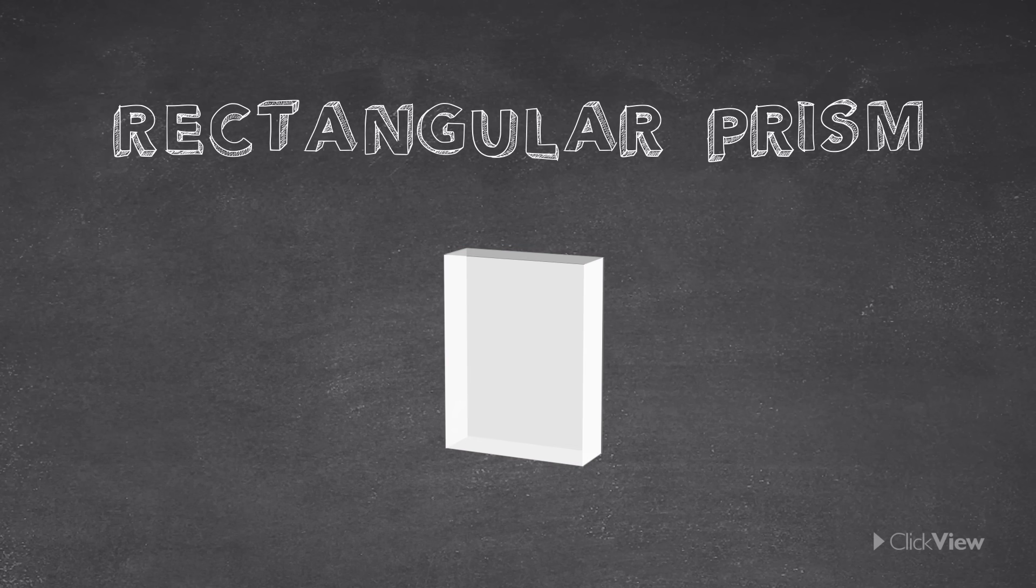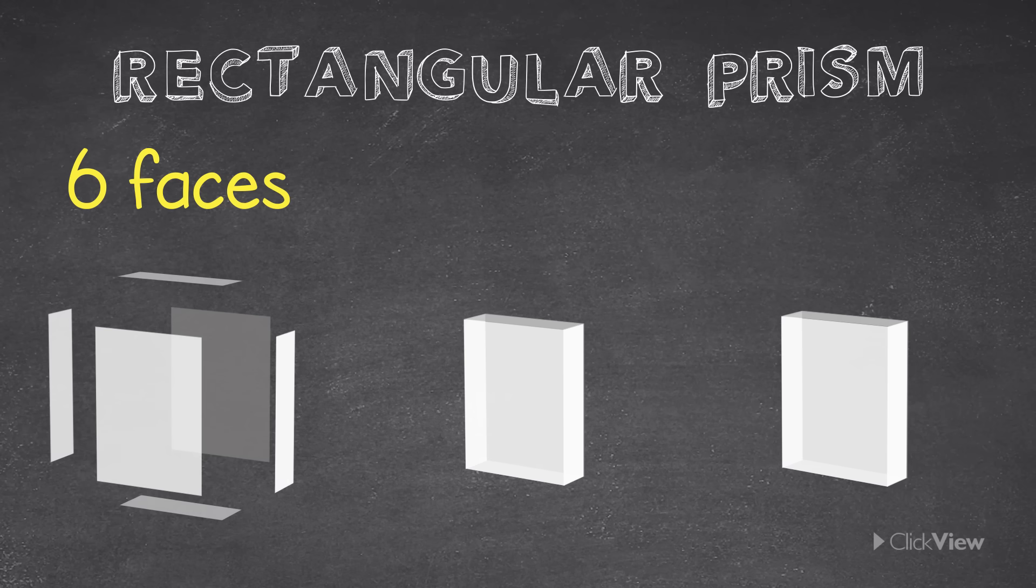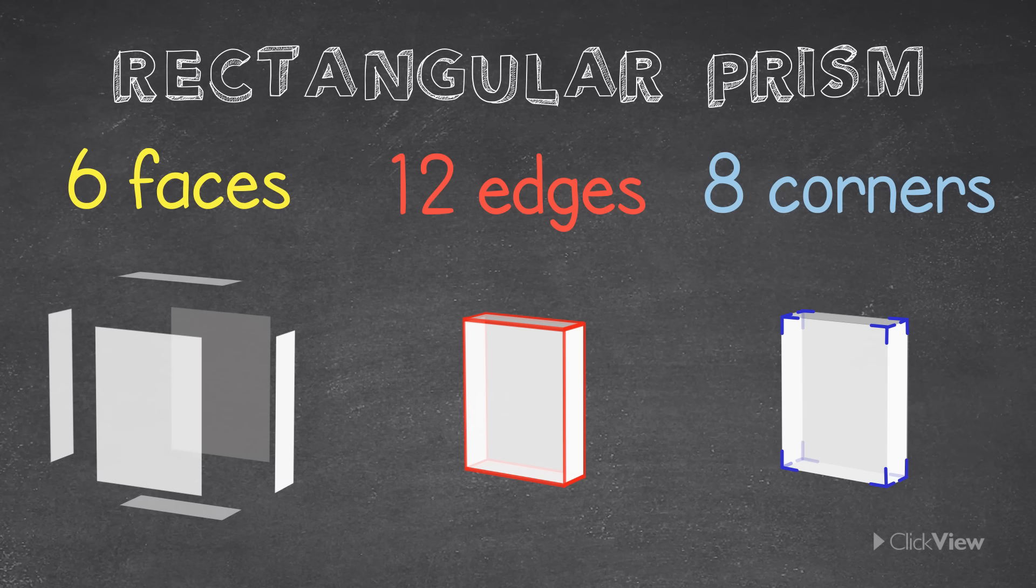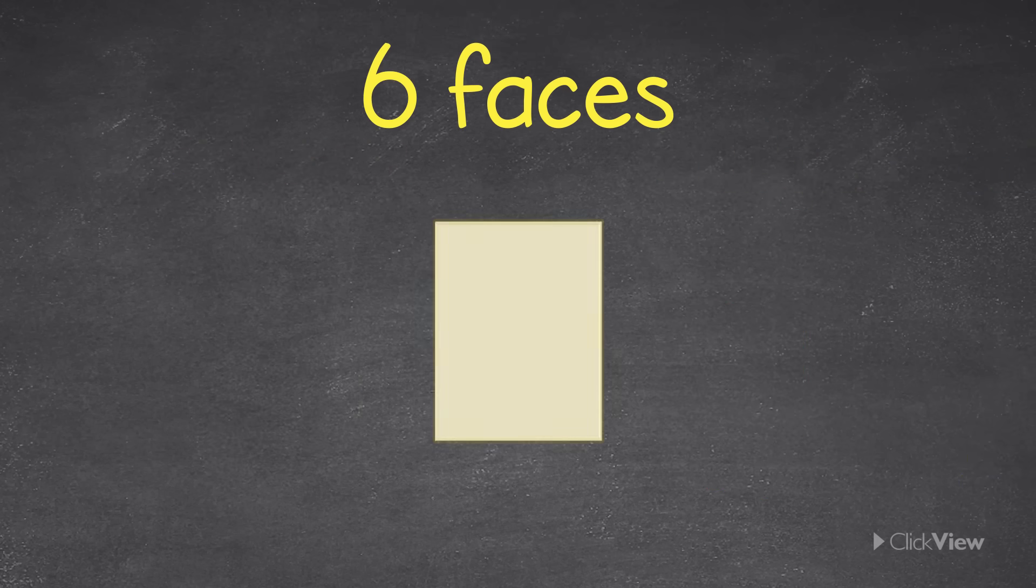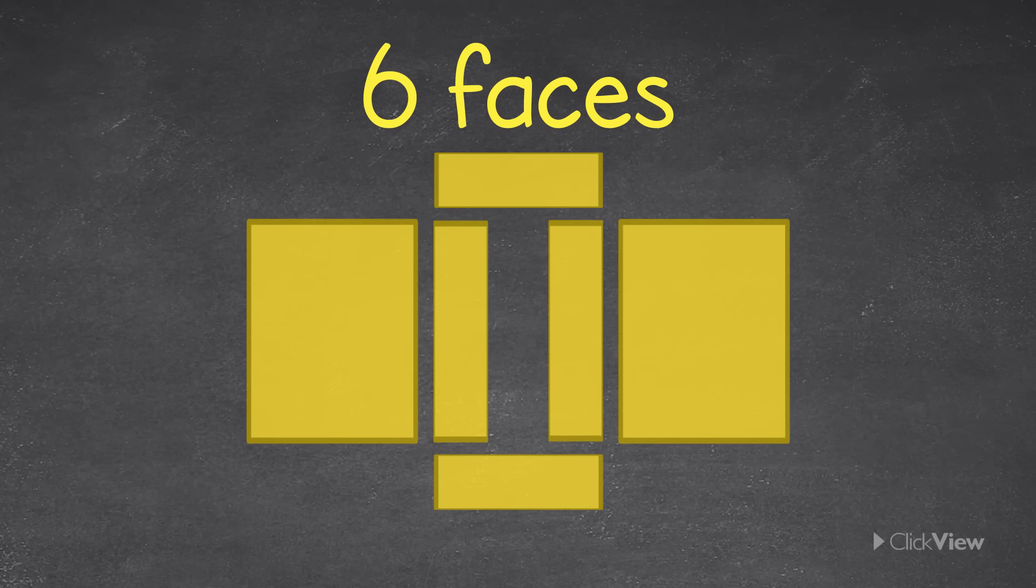This shape is called a rectangular prism. A rectangular prism has 6 faces, 12 edges and 8 corners. It's very similar to the cube, except instead of all the faces being squares, they're rectangles. The opposite faces of a rectangular prism are always the same size.